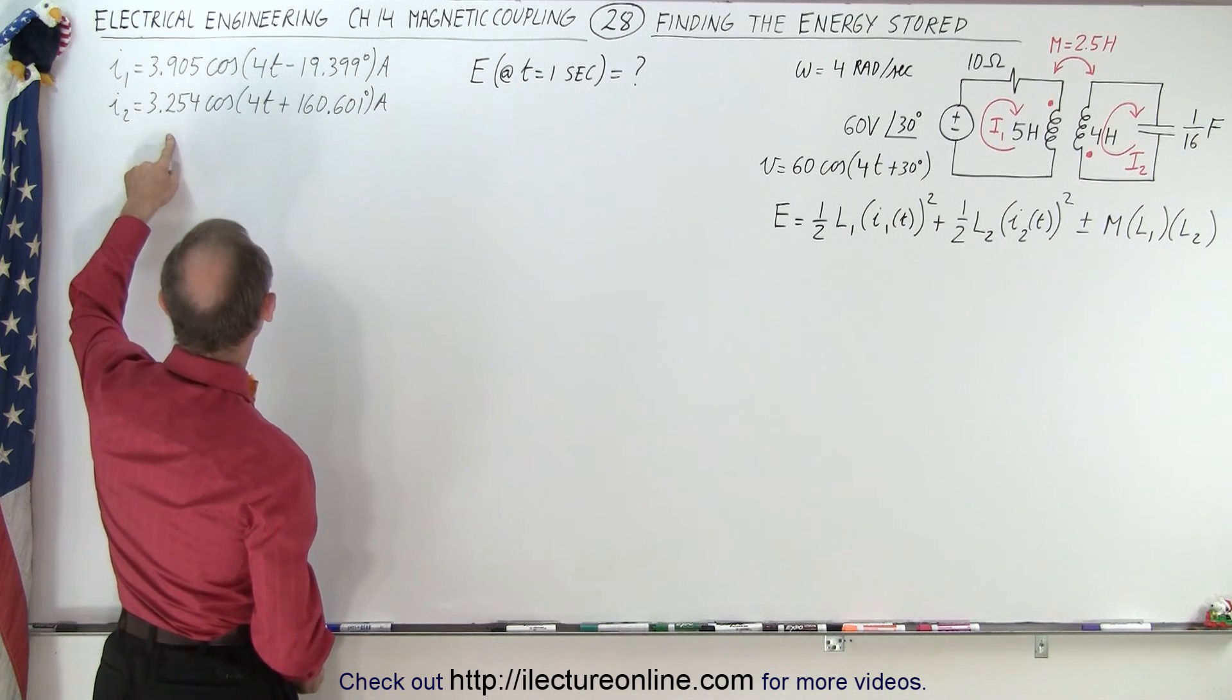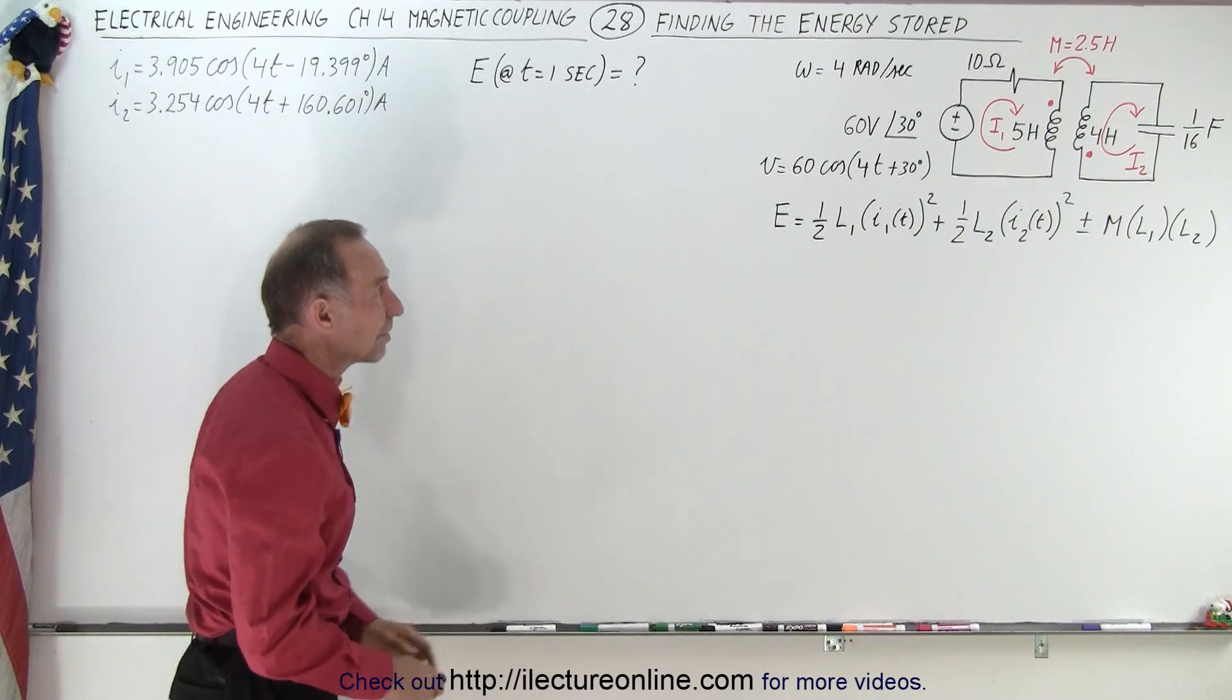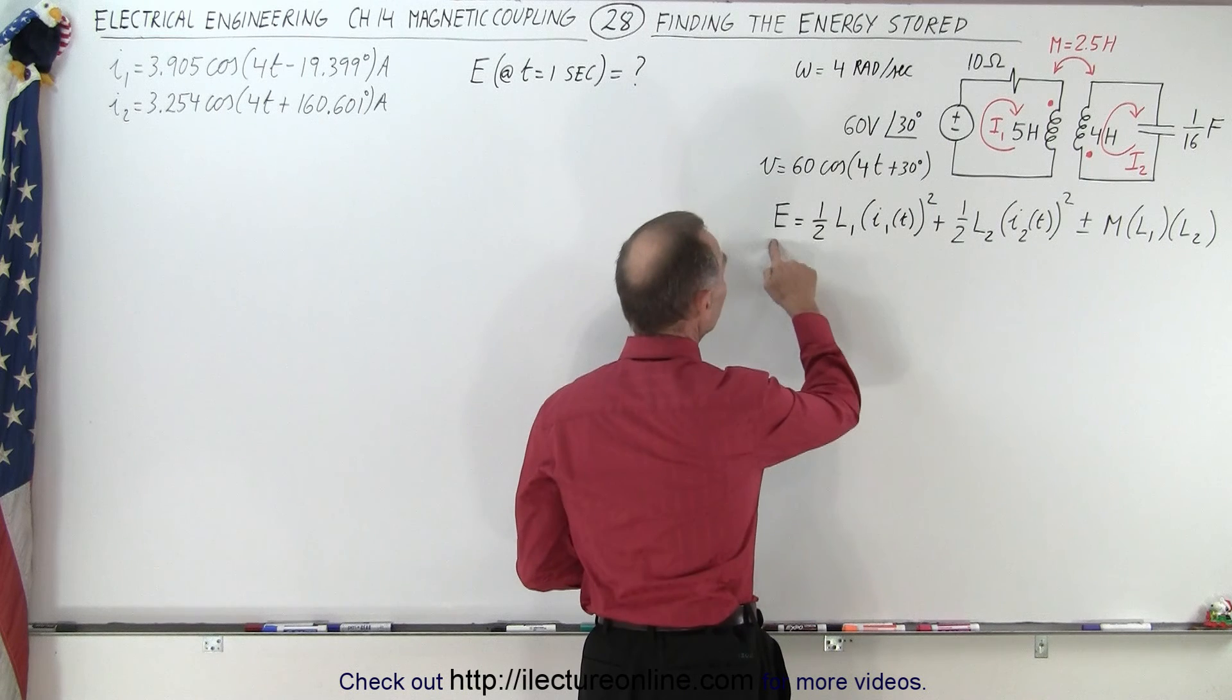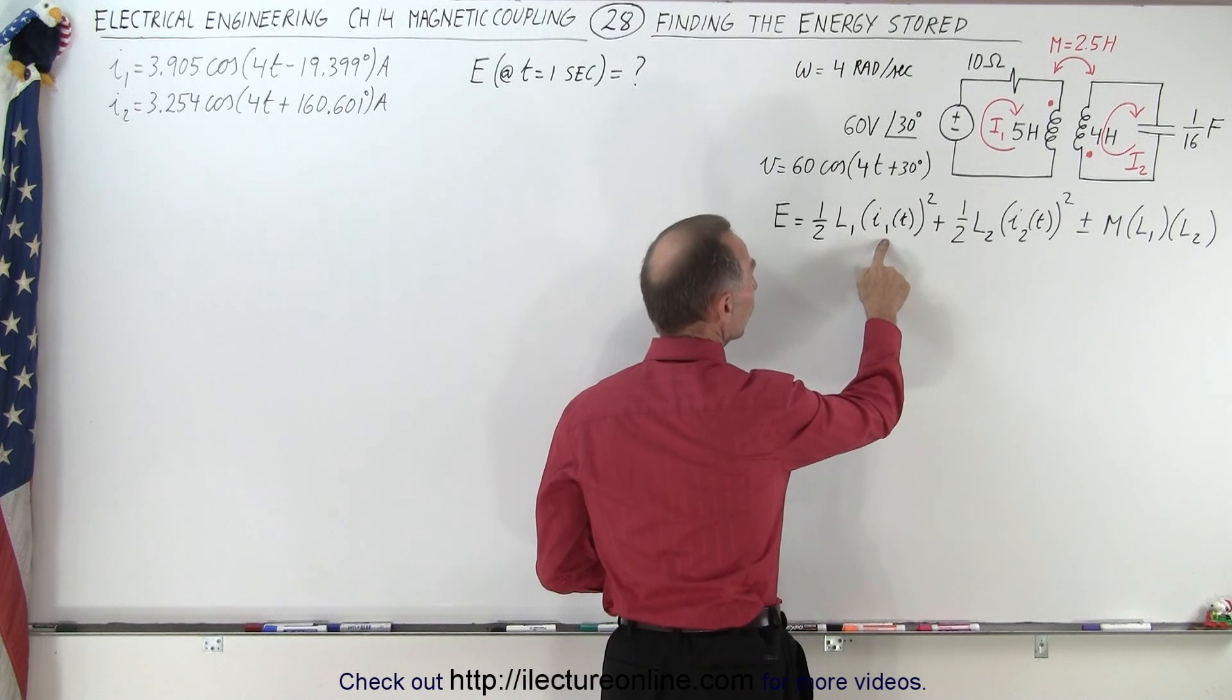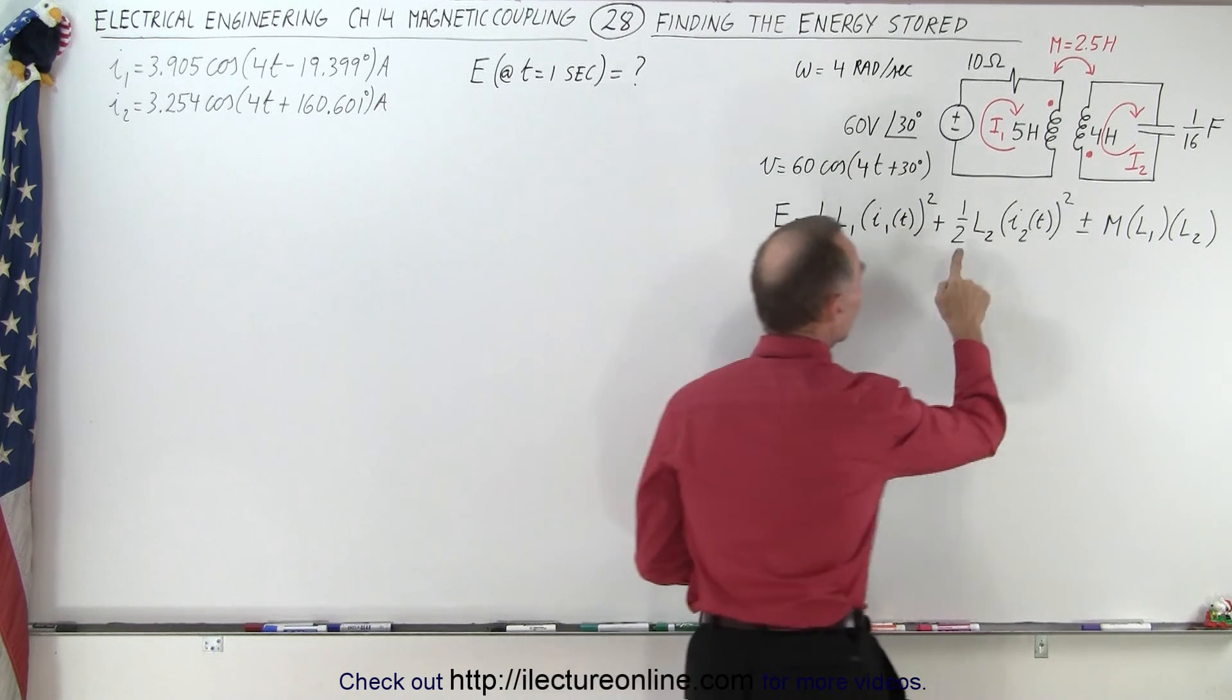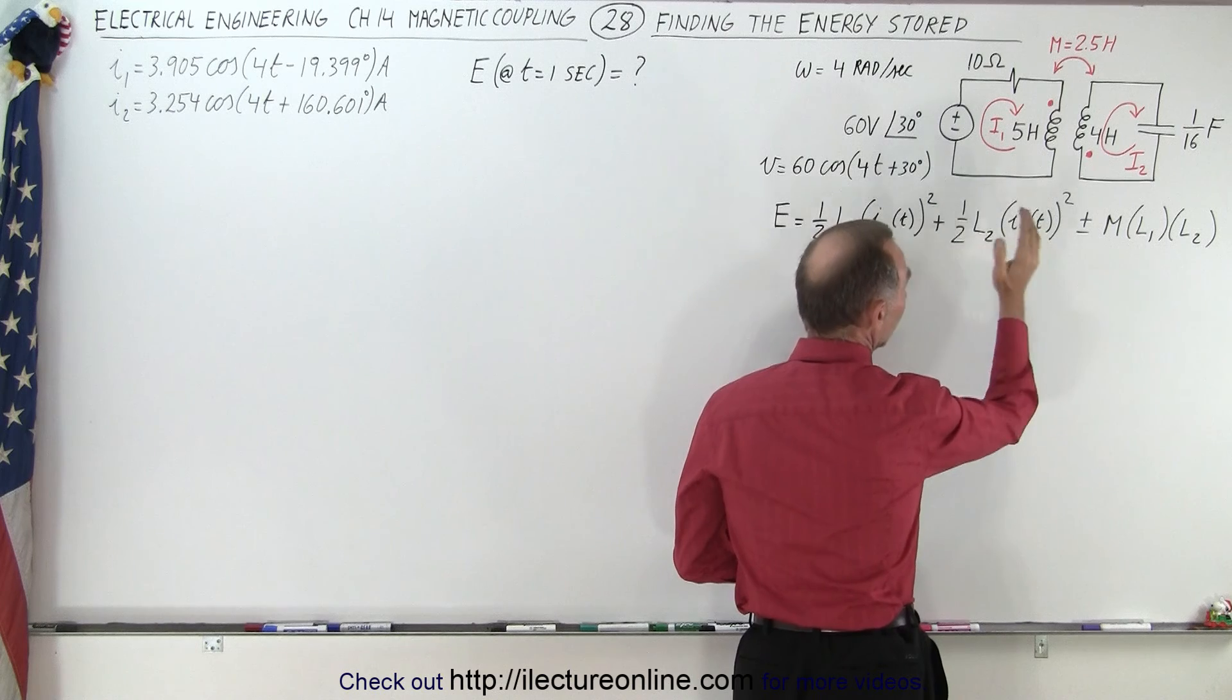Here we have the result of the previous videos where we calculated the current for I1 and I2 as a function of time, including the phase angle. Here we have the equation that tells us the energy stored in the circuit is one half times the inductance of the first inductor times the current through that inductor at that moment in time squared.